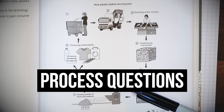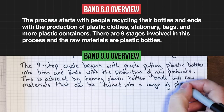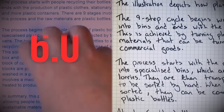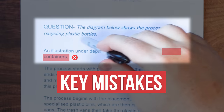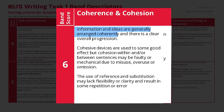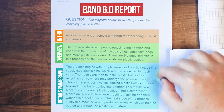If you're worried about task one process questions, this is the video for you. One of our students gave us their task one report, and we're going to show you that with just a few simple changes, we can transform a band six report into a band nine report. I'll show you the key mistakes that most students make that lead to low scores, and then show you how easy and simple it is to get a band eight or even nine. If you get a process question on test day, you'll be very happy because they're much simpler than most students understand.